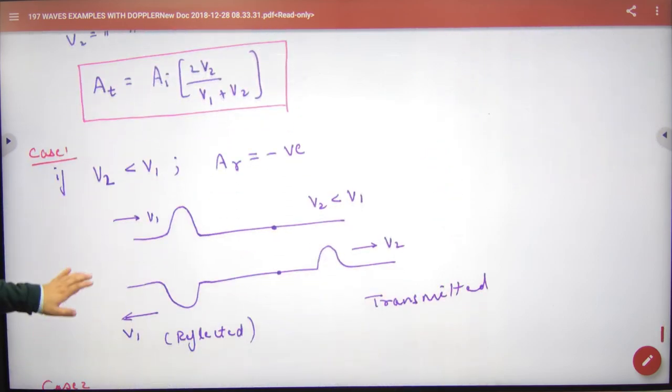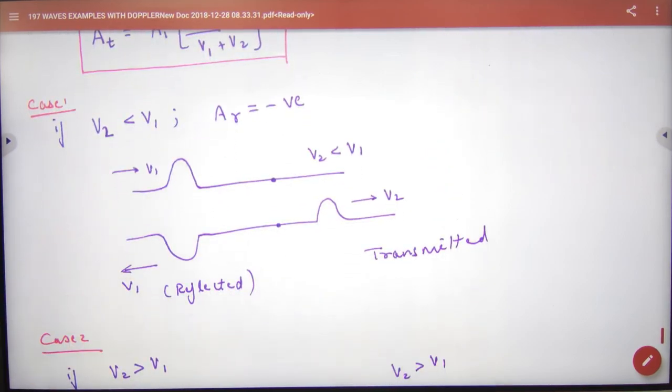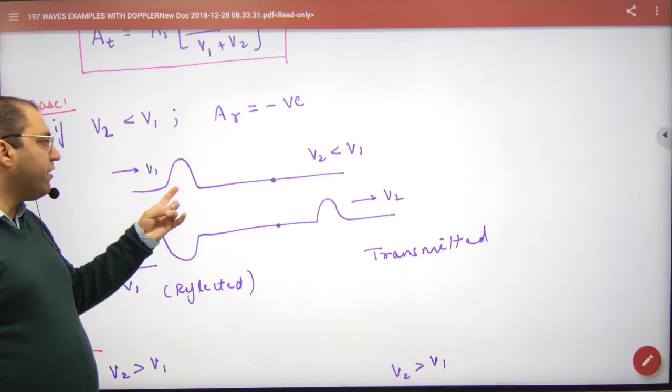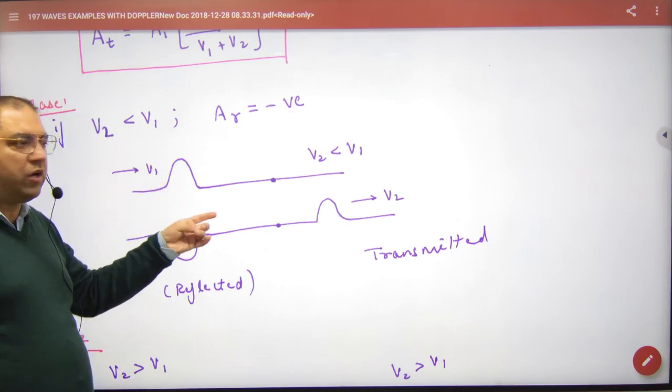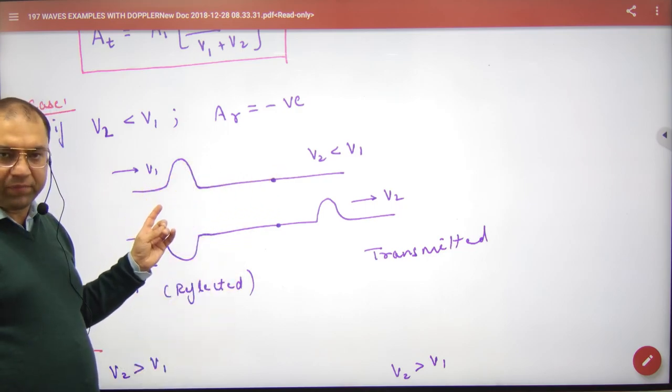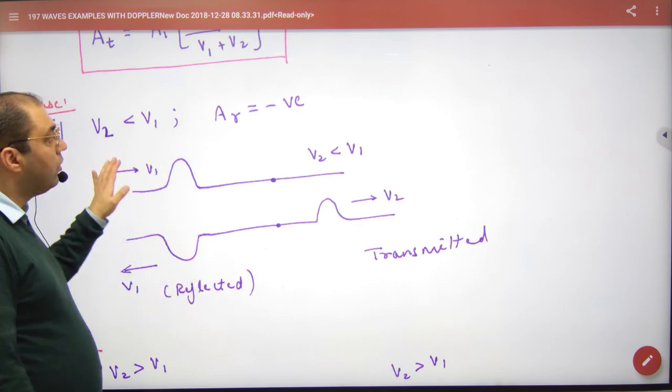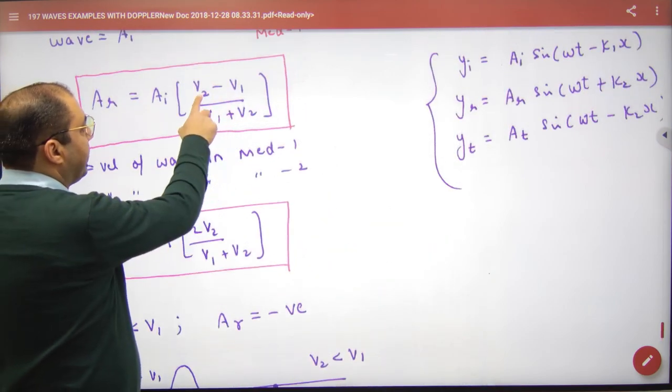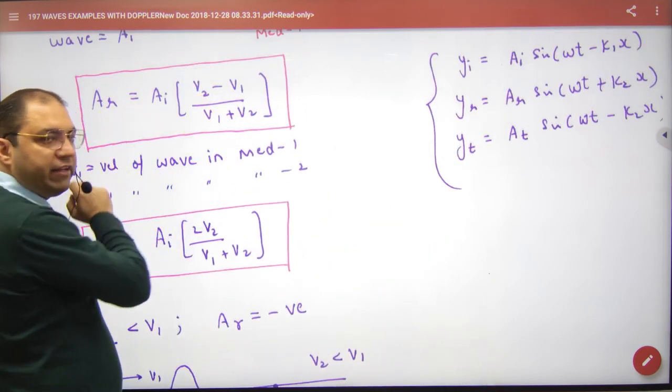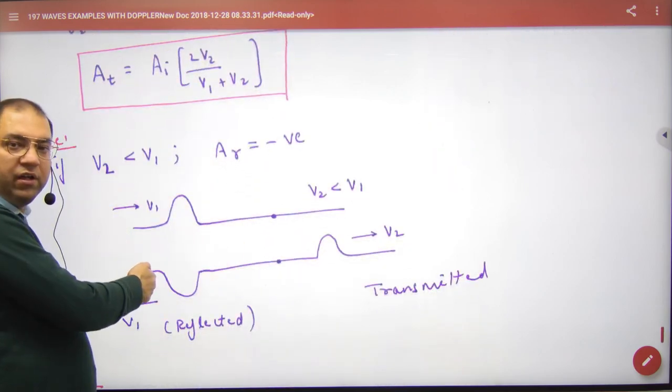It is a special case. If a wave is coming with velocity v1, and v2 is less than v1, so the speed of the other medium is slower. In this case, this term will be negative, and AR will be negative. Reflected wave negative.